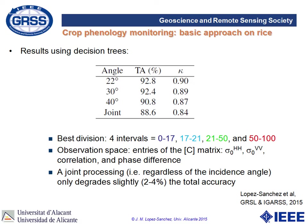The inputs for classification were the two backscattering coefficients, the correlation between channels, and the phase difference — just the polarimetric information without further processing, essentially the entries of the covariance matrix. The main limitation of this approach is that it discretizes a continuous variable — phenology — imposing thresholds where plants actually evolve in a more subtle, continuous way. An error between stage 17 and 18, for instance, appears as a large error in the discrete approach but would be a small error on a continuous scale.